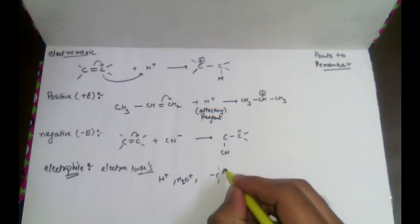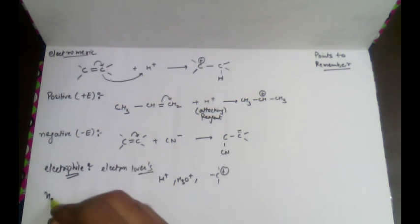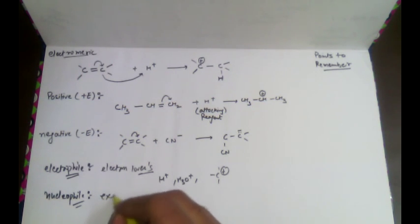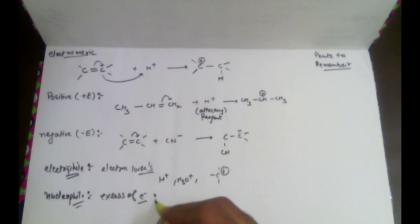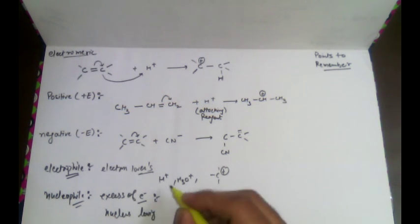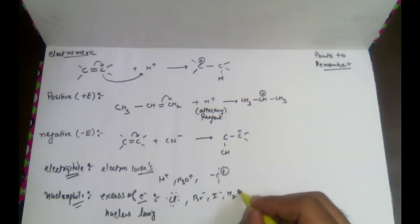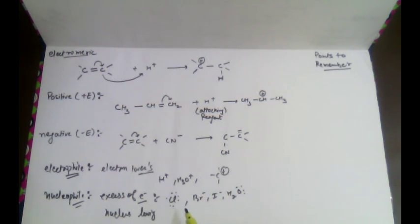H⁺, hydronium, and carbocation are all examples of electrophiles. Nucleophiles, on the other hand, are nucleus-loving species. Both electrophiles and nucleophiles are called attacking reagents. Nucleophiles are nucleus-loving because they have an excess of electrons. Examples include chlorine, bromine, iodine, and H₂O, all of which have excess lone pairs.